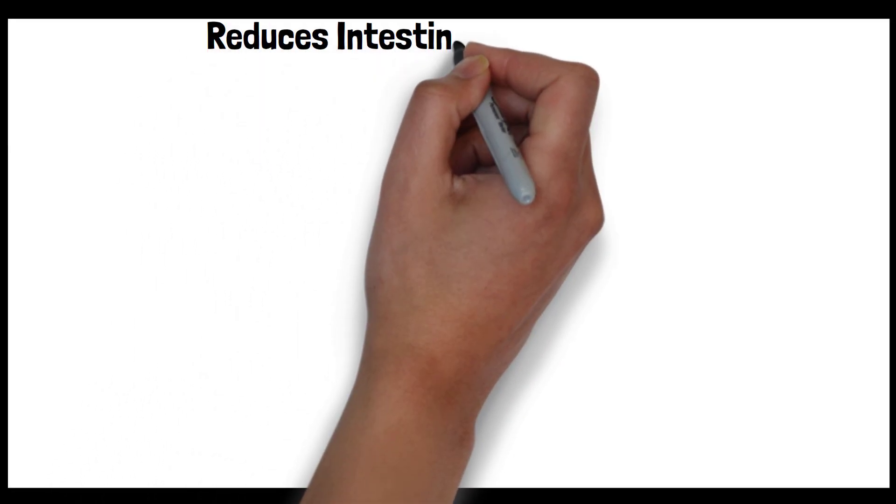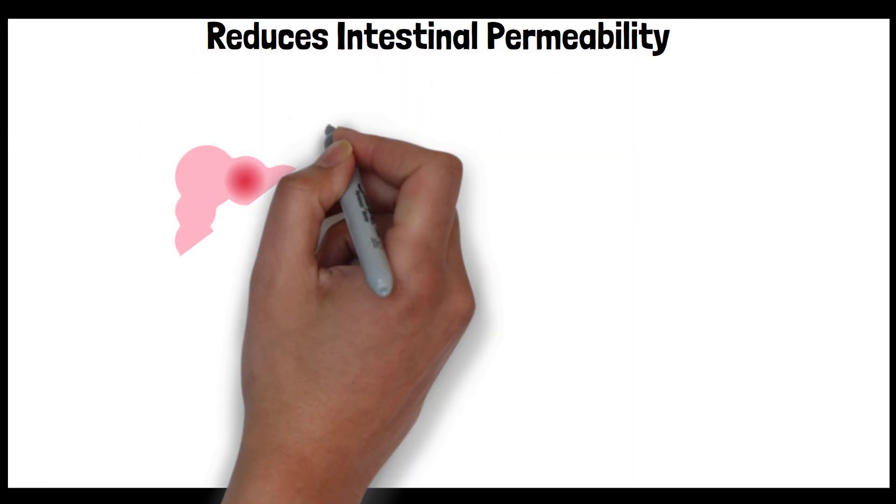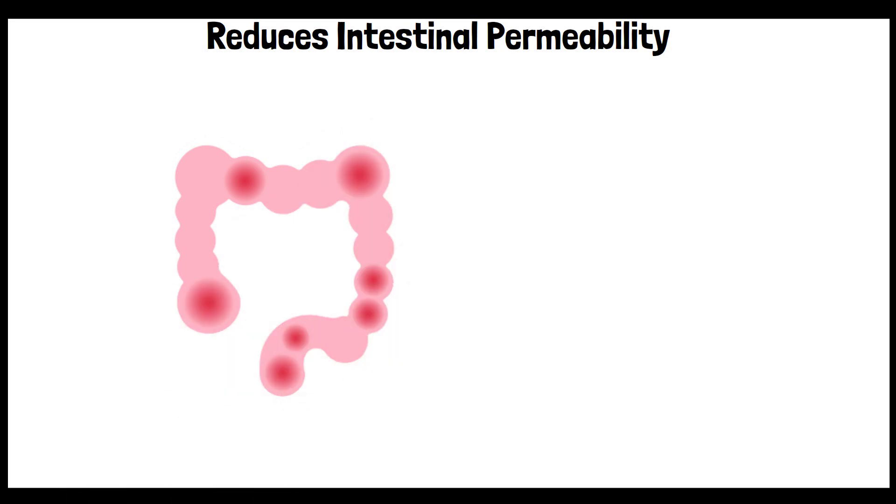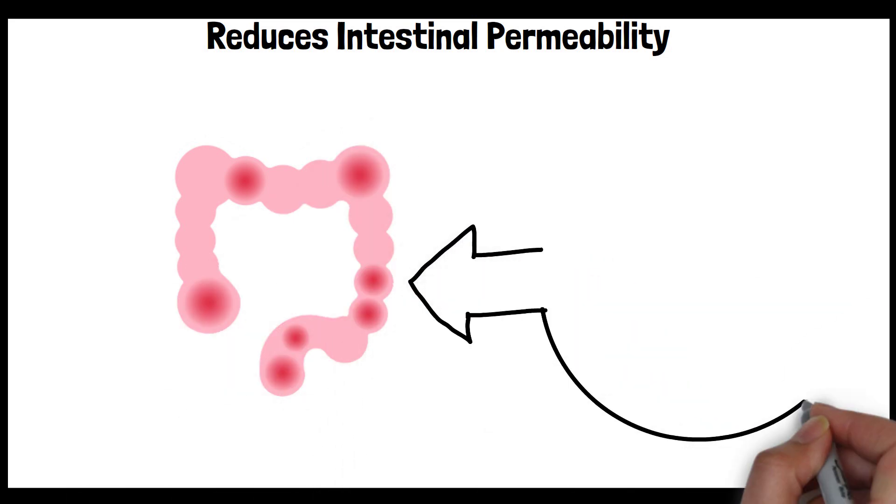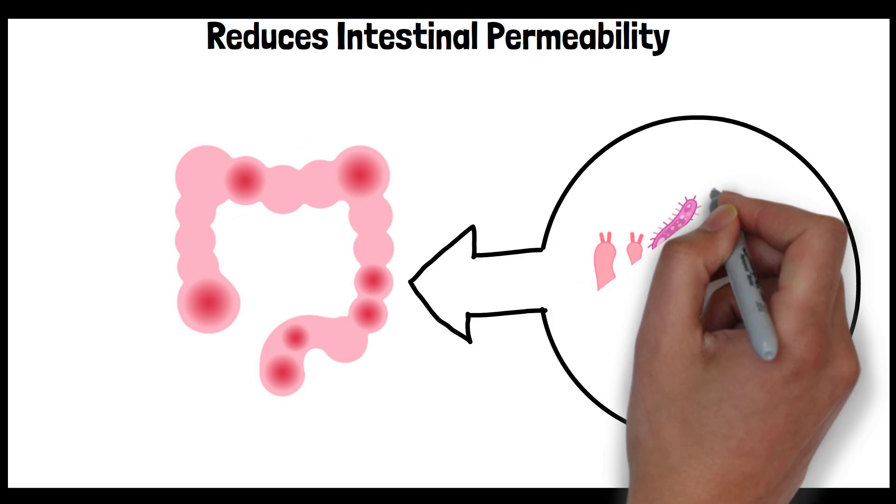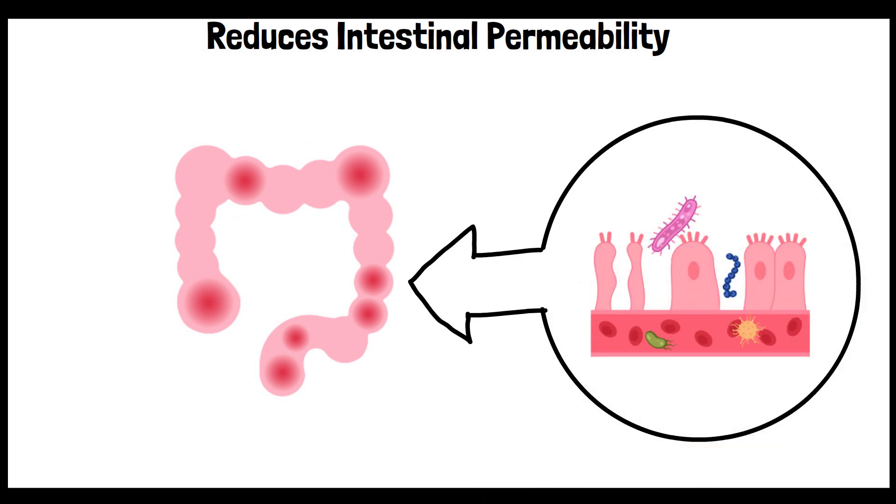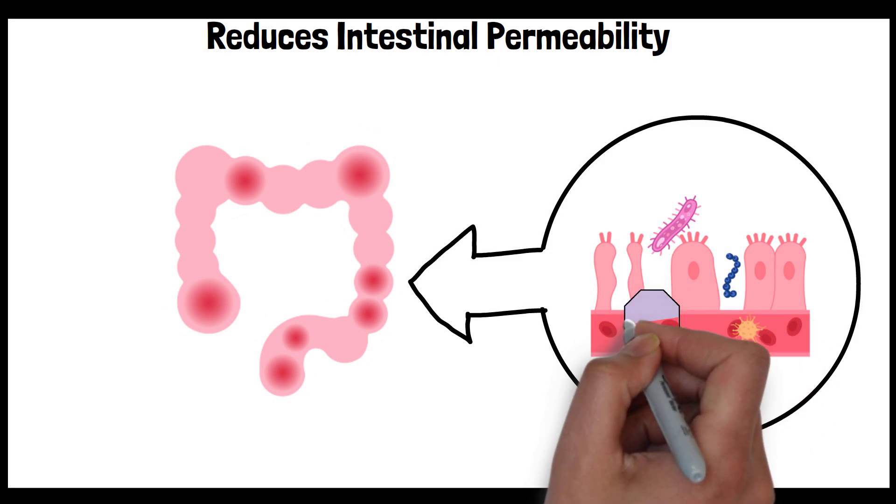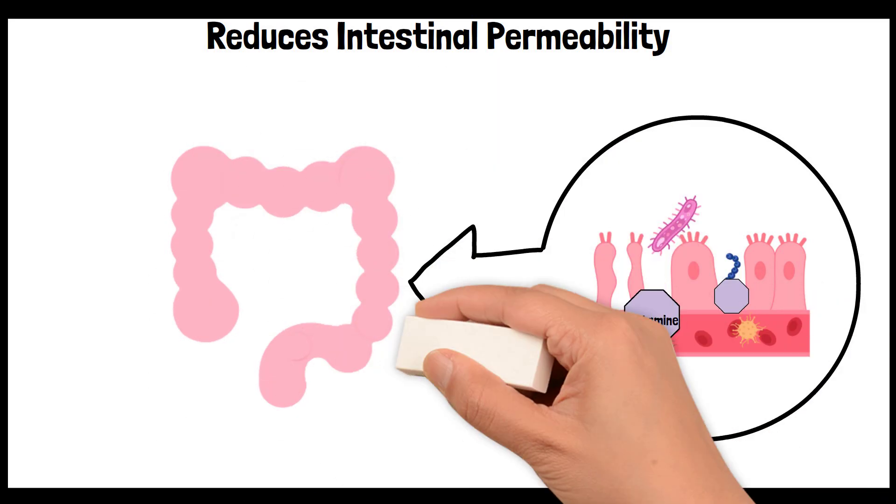Nine, reduces intestinal permeability. In serious conditions, increased gut permeability, leaky gut, can lead to systemic complications. Glutamine helps strengthen the gut barrier, reducing the risk of pathogens and toxins passing into the bloodstream and causing widespread inflammation or infection.